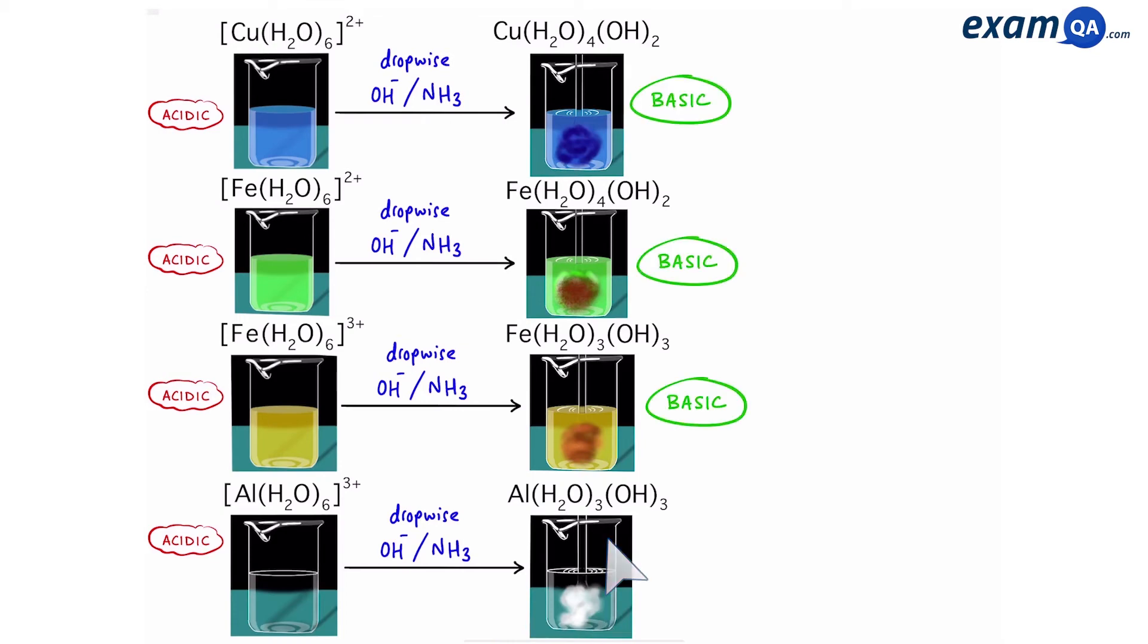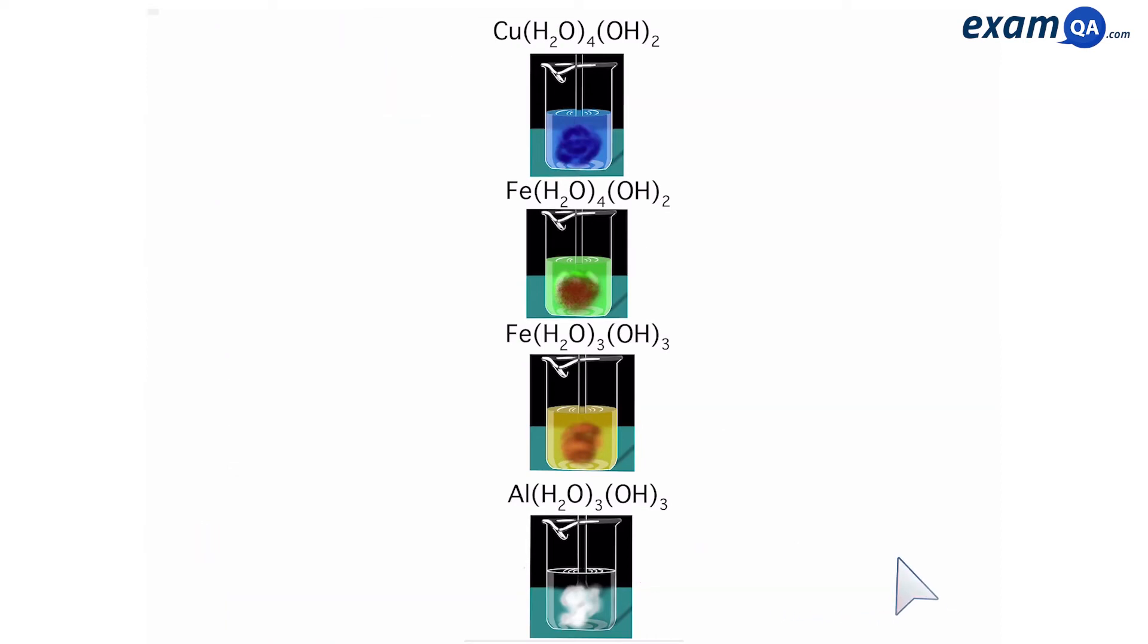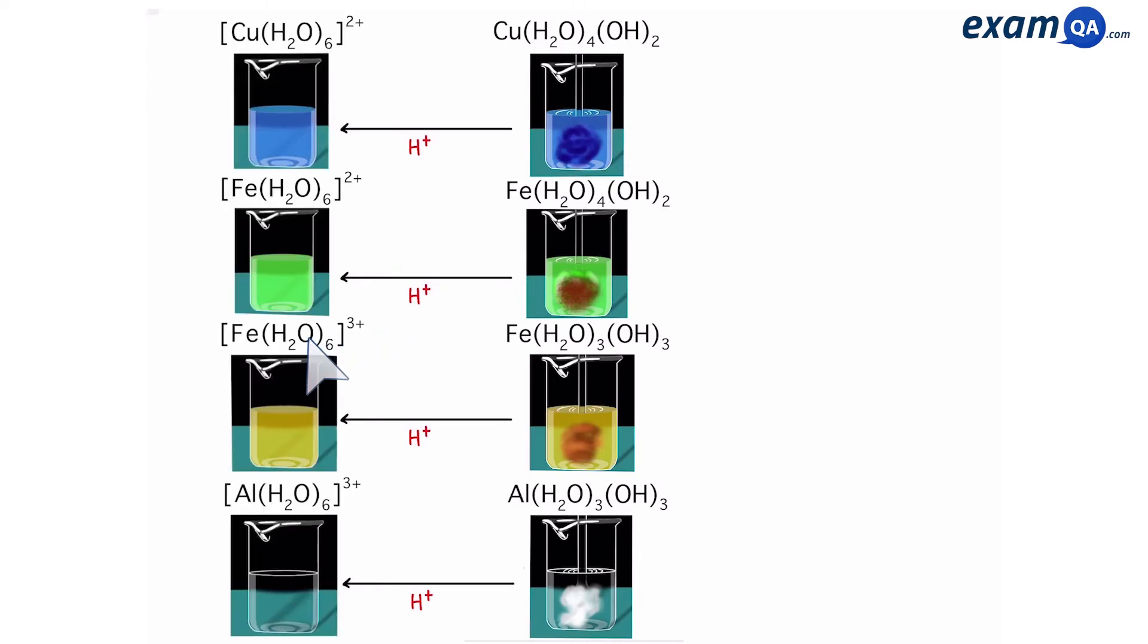The first three precipitates are basic. Aluminium, on the other hand, is amphoteric, meaning it can act as a base or an acid. Now that we have these basic precipitates, if we add hydrogen ions, it turns them back into their original solution. If we add an acid, it will re-dissolve them and turn them back into their original solutions.